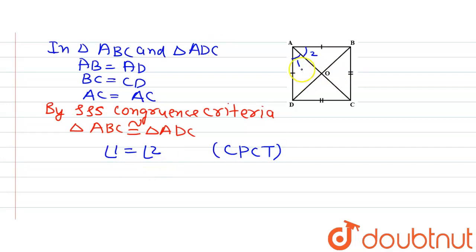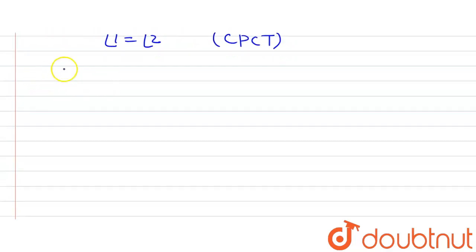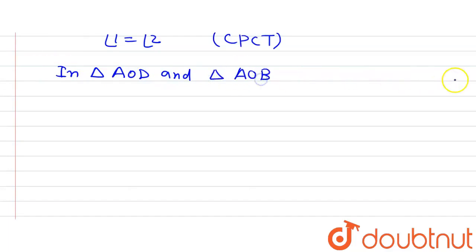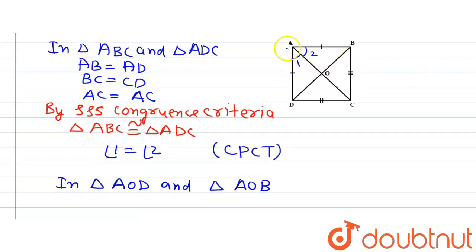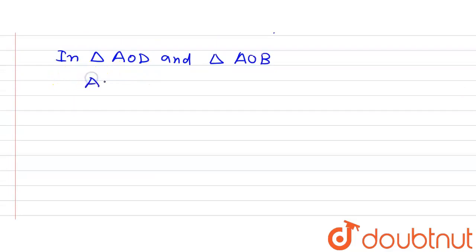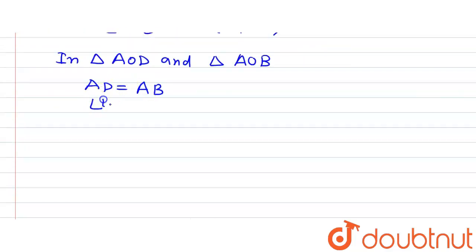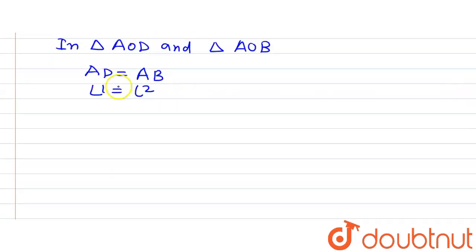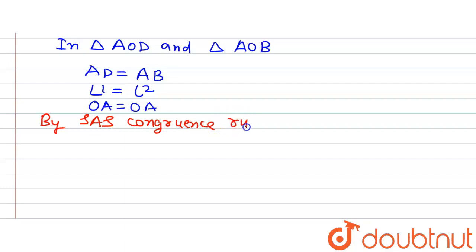Now let's observe triangles AOD and AOB. In triangle AOD and triangle AOB, AD equals AB as given in the question, angle 1 equals angle 2 as just proved, and side OA is common in both triangles. So by the Side-Angle-Side congruence criteria, triangle AOD is congruent to triangle AOB.